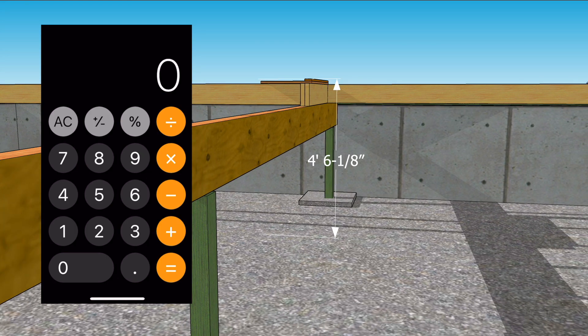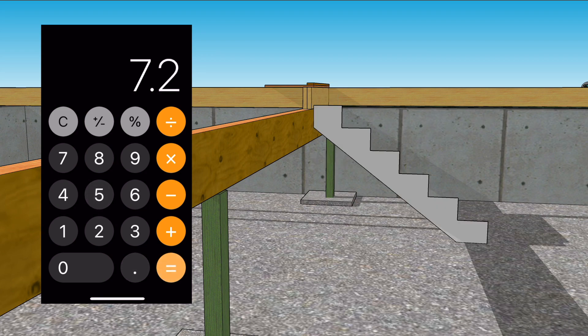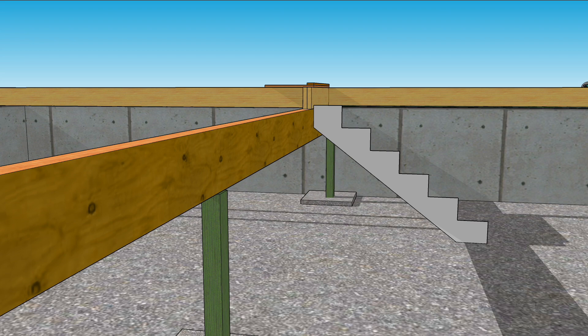Begin by dividing four foot six and an eighth by seven and a half, which is the average of what the code specifies. That yields seven point two risers, or seven risers. So with seven risers, there will be six treads.